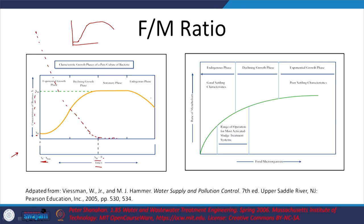As bacteria reach the endogenous phase they give out a slime layer — these slime layers help in forming flocs and the bacteria sticking together. So if you can ensure your microbial population is in this phase, you are going to have good sludge settling characteristics.